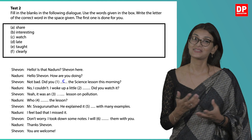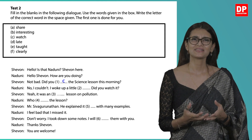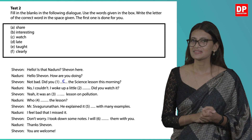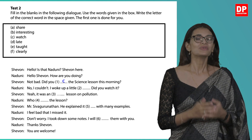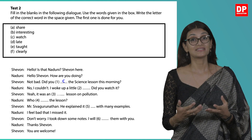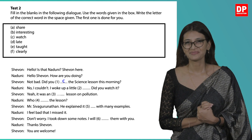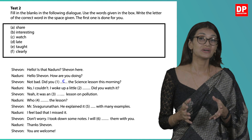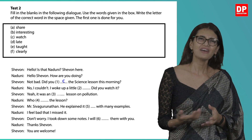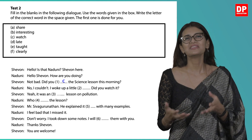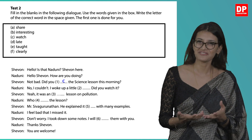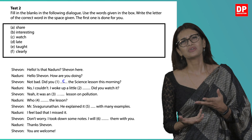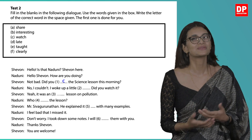Now let's look at test two: fill in the blanks in the dialog using the words given in the box. You are once again expected to write the letter of the correct word, and the first one is done for you. The words given are in the form of adjectives and verbs. When you read the sentence, try to figure out what best suits it.